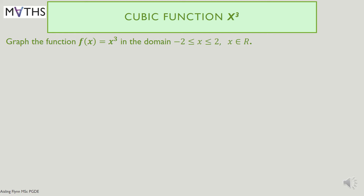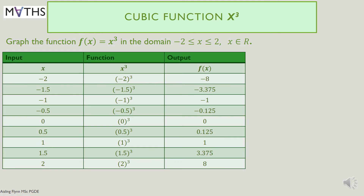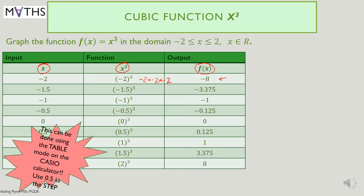Let's look at graphing the x cubed function. Graph f(x) = x³ in the domain where x is between minus 2 and plus 2. You can form a table with your inputs as x and carry out the function x to the power of 3. Remember, if we take minus 2 as input it's minus 2 × minus 2 × minus 2, giving a negative output of negative 8. Calculators can do this using the table function. In this example I've used 0.5 as the step, which gives more points for a smoother curve — the calculator automatically selects 1 as the step but you can change that.